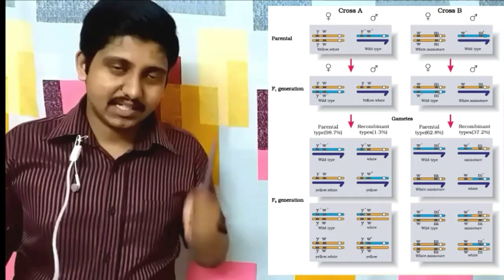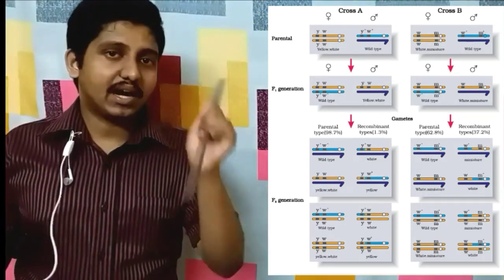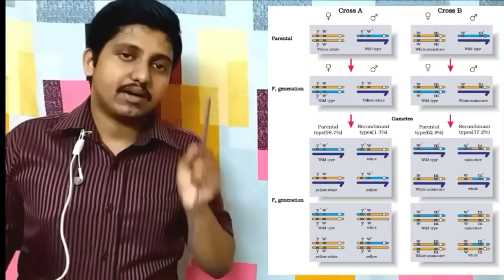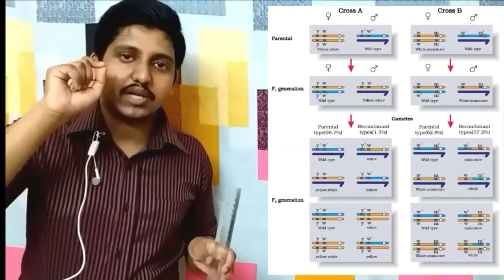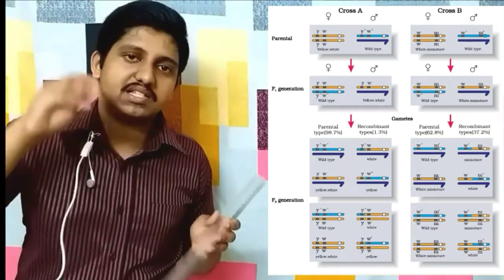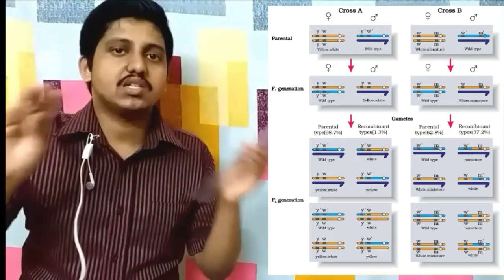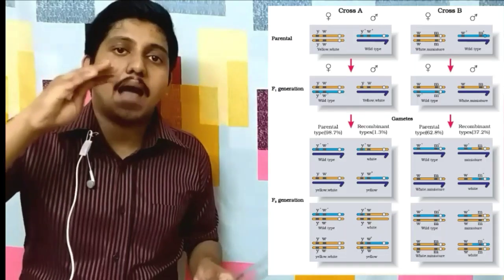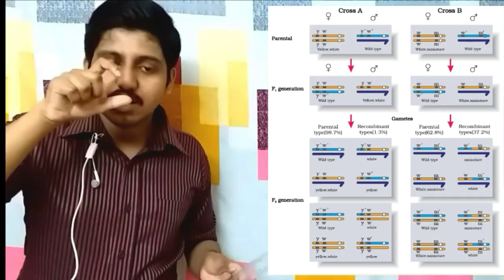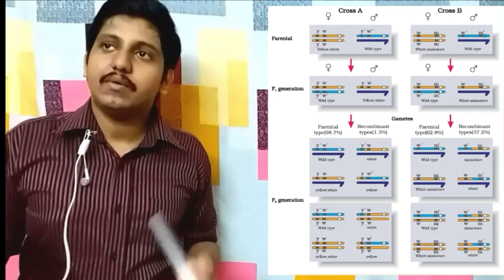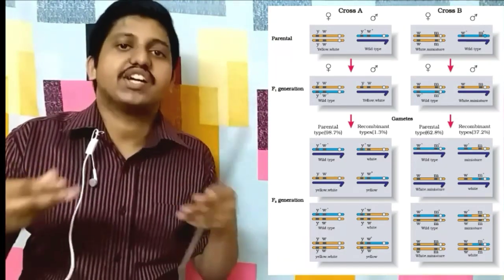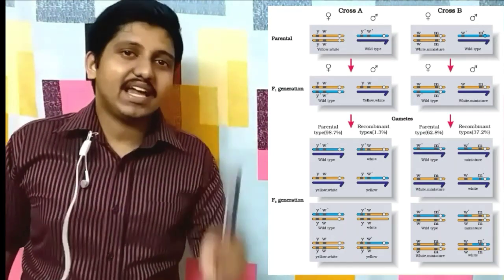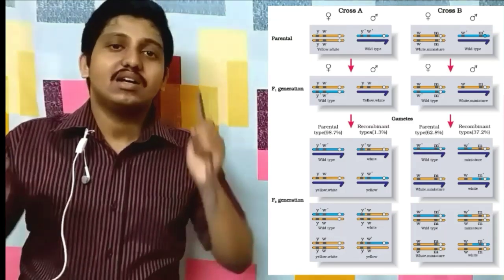Here are two bonus points. First, regarding linkage groups: a linkage group refers to all the genes on a chromosome. The maximum number of linkage groups equals the haploid number of chromosomes in a species — for example, 7 in pea and 1 in bacteria.